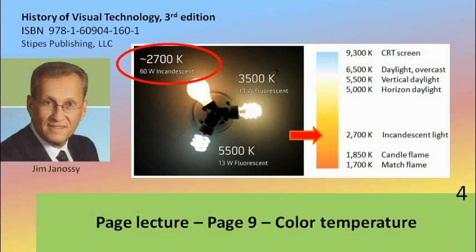Here we have the red arrow pointing to where on the scale — from orange to yellow to white to blue — the incandescent light bulb falls. You'll see that it's fairly low in the scheme of things, and it produces a yellowish, cozy glow. We've pretty much become accustomed to that for artificial light sources because light bulbs were the light source used for over a hundred years.